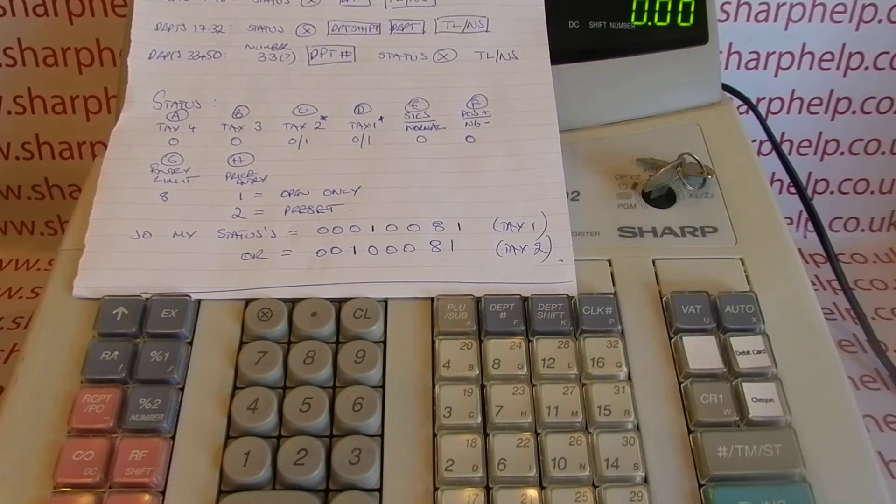In this video from Sharp, we're taking a look at assigning different tax rates to your sales categories or departments on the XEA 202, 212, and 301 registers.